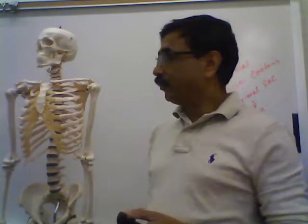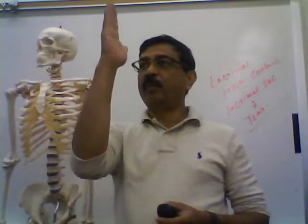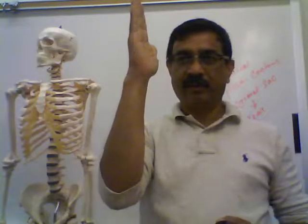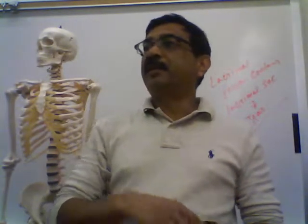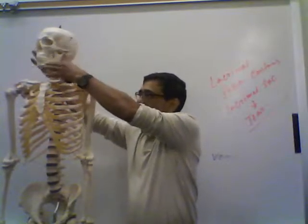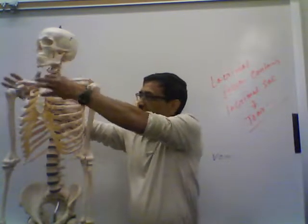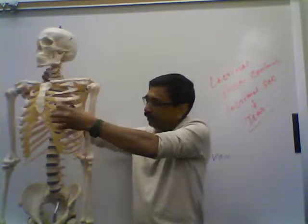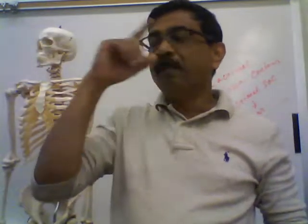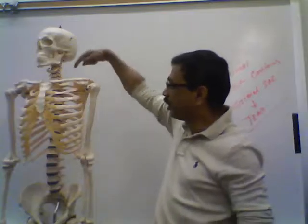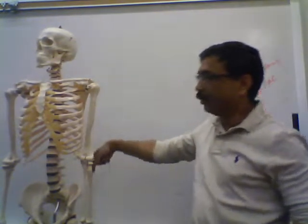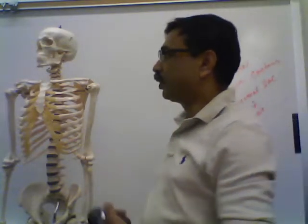The vertebral column has three important functions: it keeps the body straight; it transmits weight from the upper part of the body to the lower part; and it protects the spinal cord, which is located inside the vertebral column.